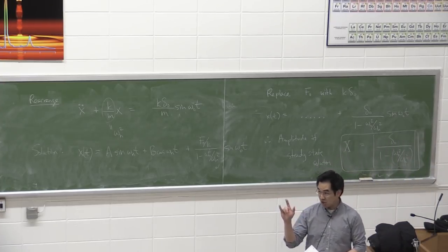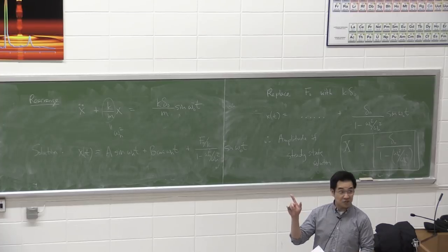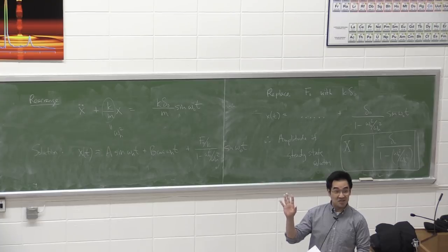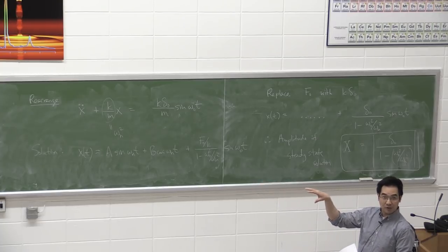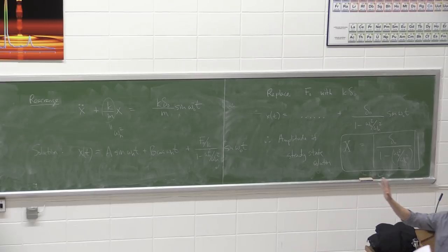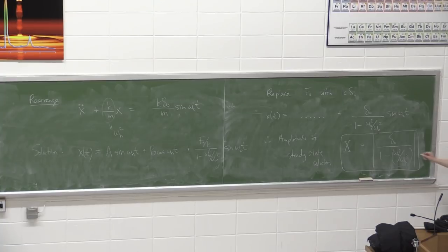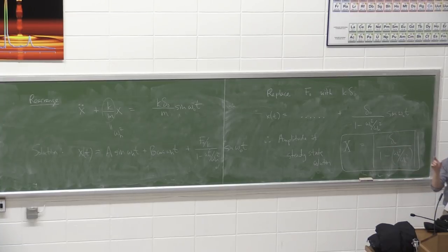Still vibrations that are forced and undamped — nothing different. The only thing is instead of a hand grabbing the mass and moving it back and forth, I've made the support — the wall — be the thing that vibrates. And you get this new symbol δ₀ in the numerator representing the displacement.